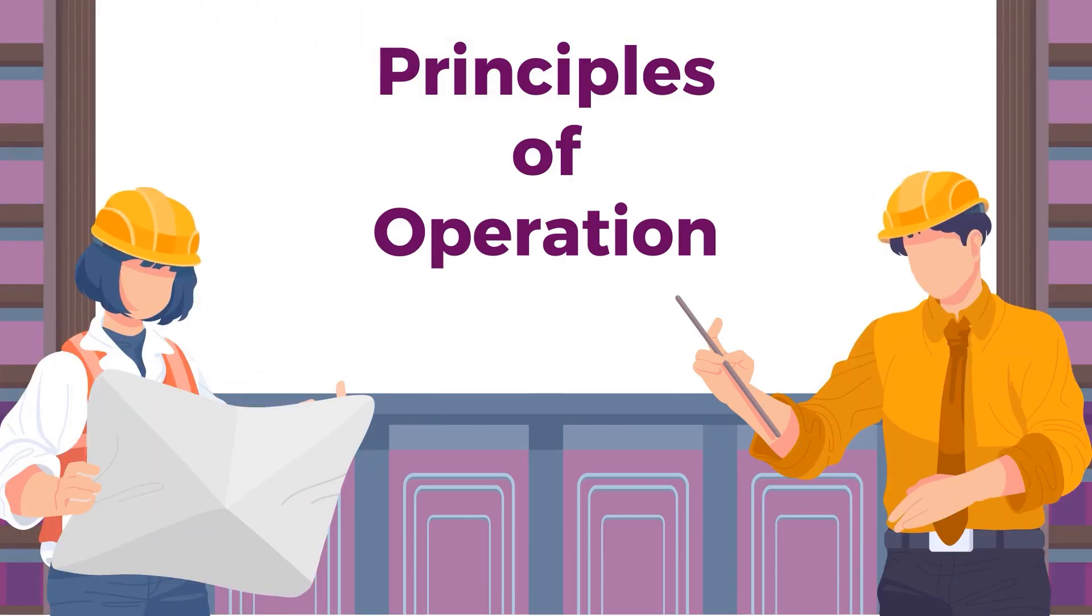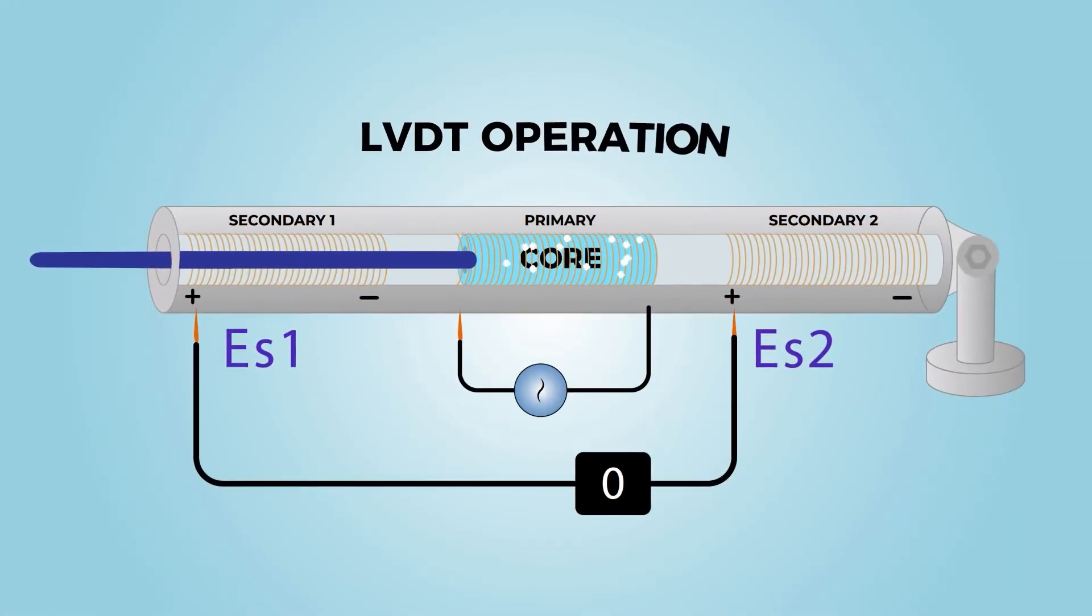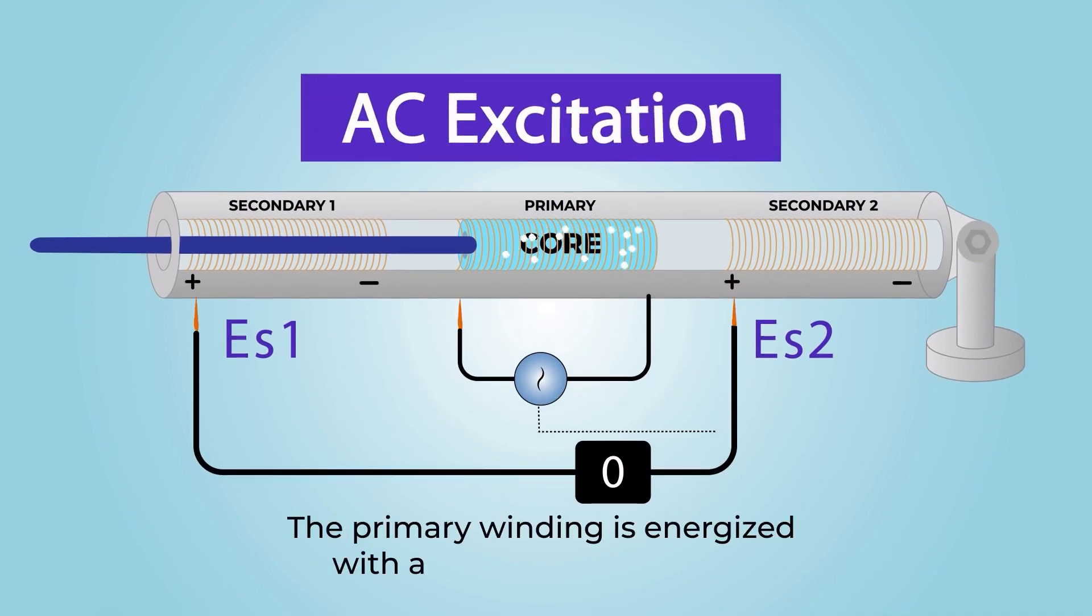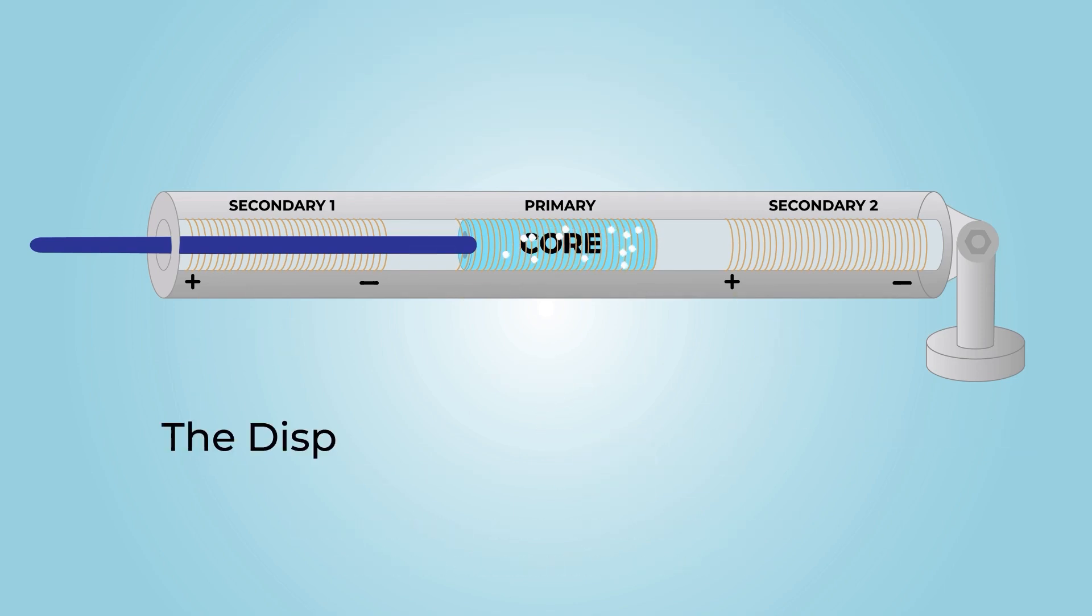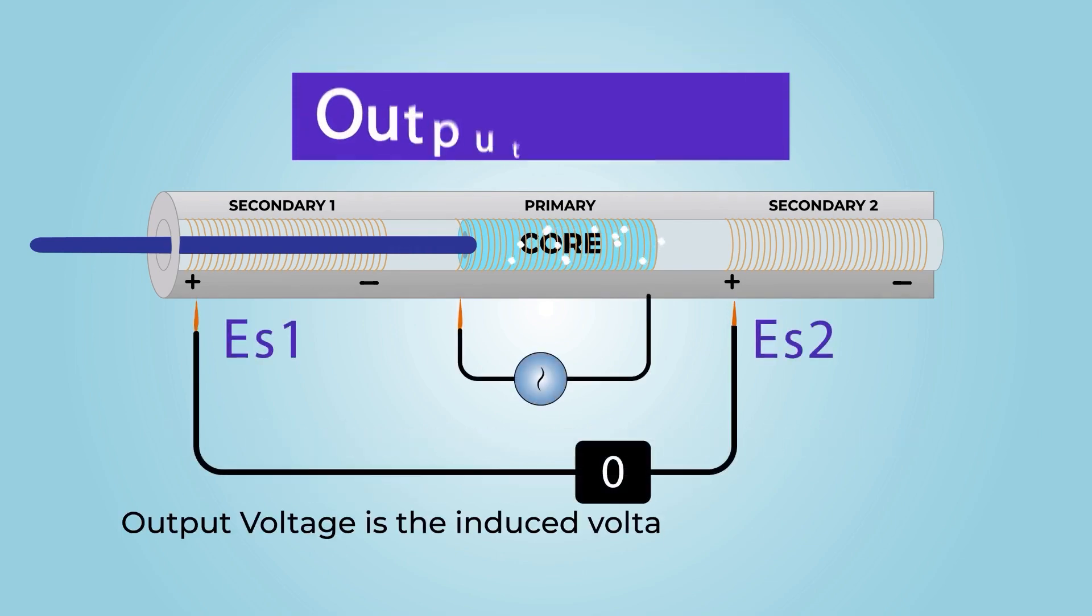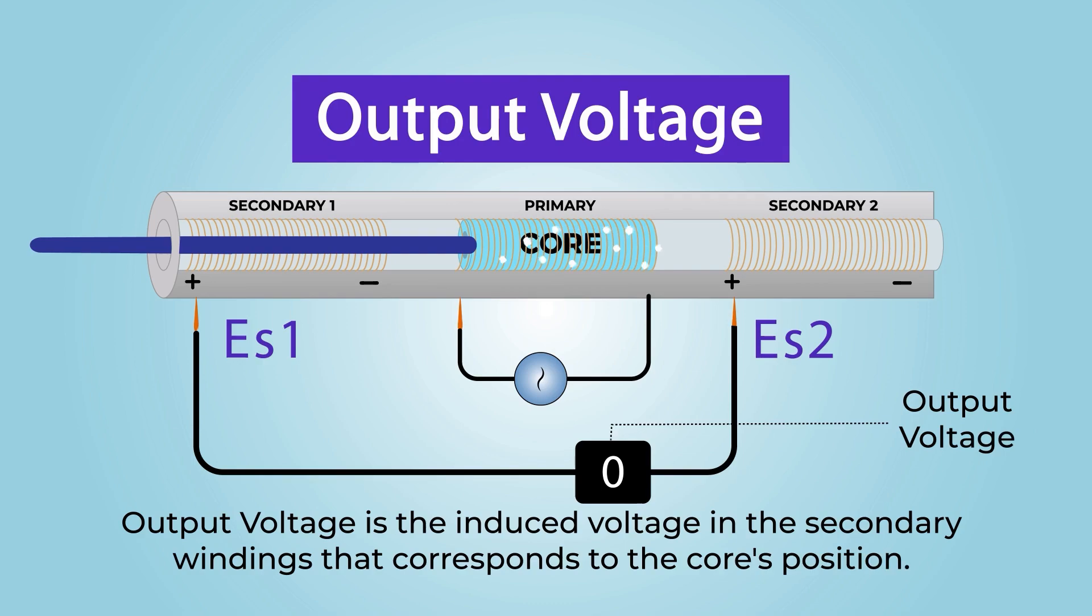Now let's discuss the principle behind the LVDT's operation. For an AC excitation, the primary winding is energized with an alternating current. The displacement of the core induces changes in magnetic coupling. The output voltage, induced in the secondary windings, corresponds to the core's position.